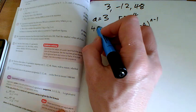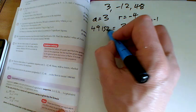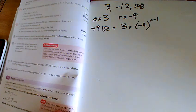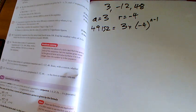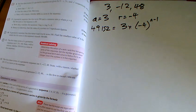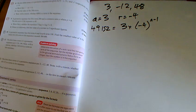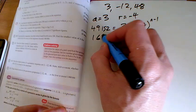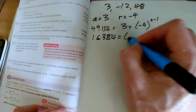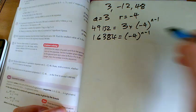Where you're being asked, is 49,152 in this sequence? So let's put that in there. If I do 49,152 divided by 3, I get 16,384 equals minus 4 to the n, take away 1.